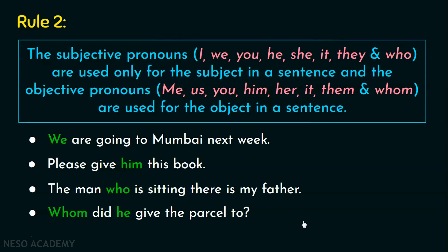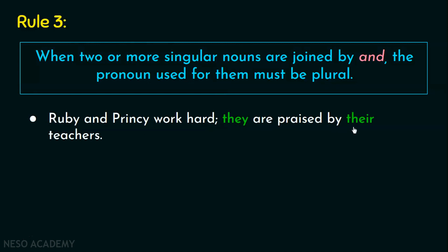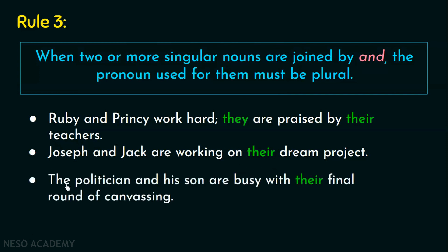The third rule is: when two or more singular nouns are joined by AND, the pronoun used for them must be plural. You need to check whether there are two or more singular nouns joined by AND, and if so, the pronoun must be plural. For example, 'Ruby and Princey work hard — they are praised by their teachers.' Two singular nouns joined by AND, so the pronouns are plural: 'they' and 'their.' Similarly, 'Joseph and Jack are working on their dream project.' And: 'The politician and his son are busy with their final round of canvassing.'